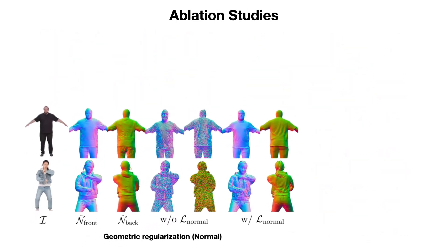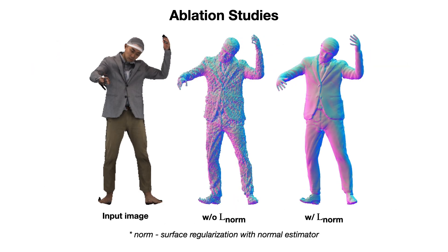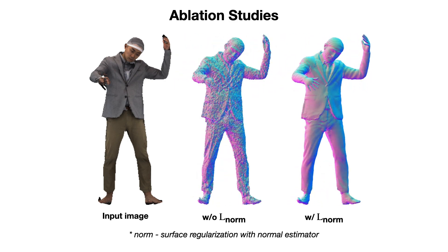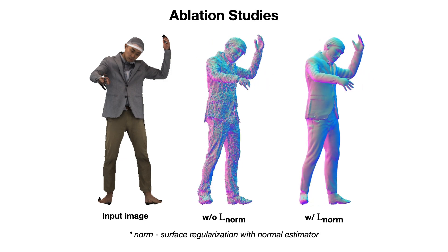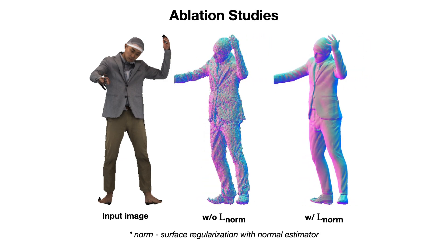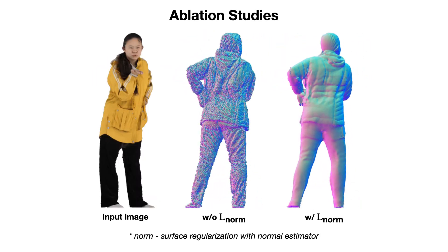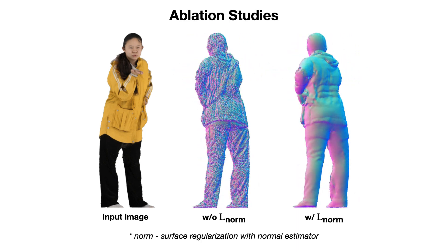Secondly, we show the effect of using normal predictions as geometric regularization. The main reason we introduced this geometric regularization is that using only SDS loss to optimize the geometry will produce noisy artifacts. This issue can be mitigated by incorporating normal loss at the beginning of optimization.